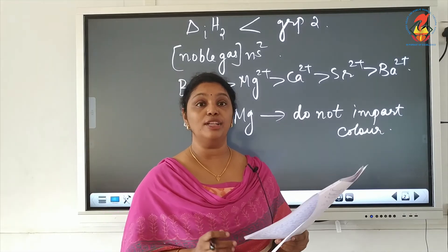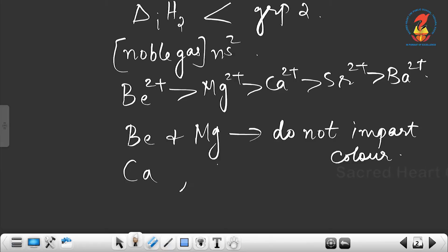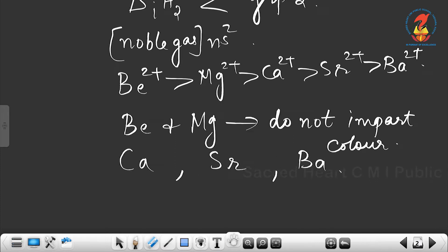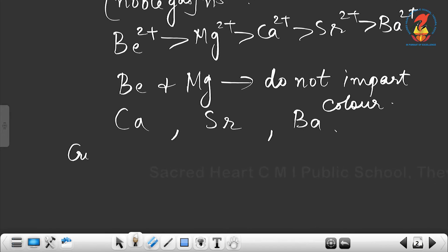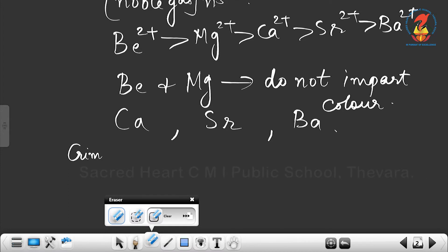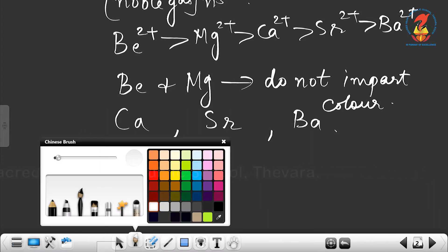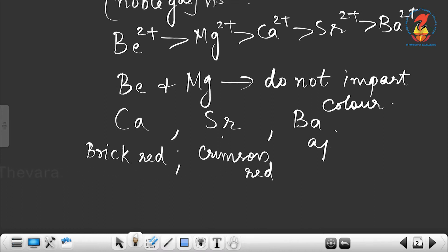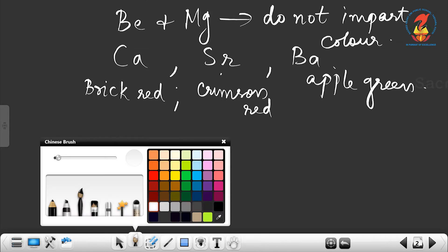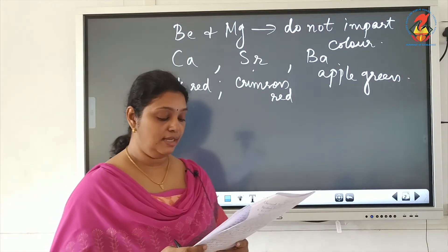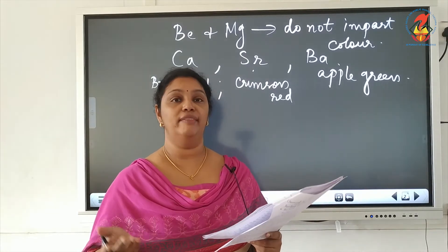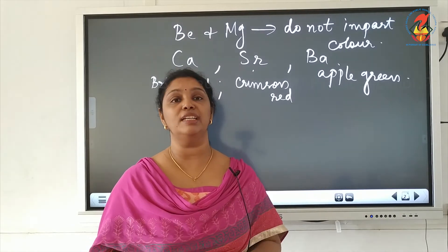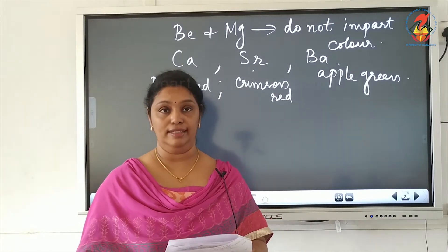Calcium, strontium, and barium do give color to the flame. Calcium gives brick red, strontium gives crimson red, and barium gives apple green. They give color because in the flame the electrons are excited to a higher energy level, and when they return to the lower energy ground state, energy is emitted in the form of visible light which we see as colors.